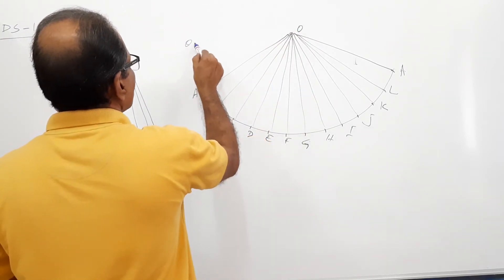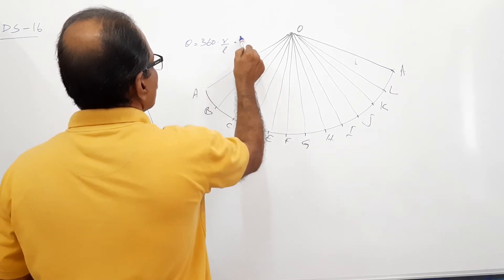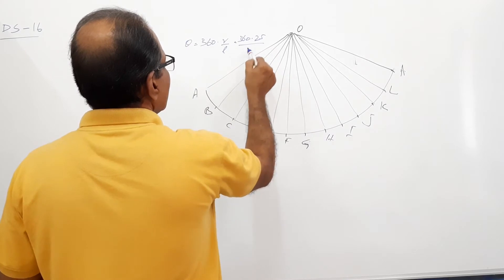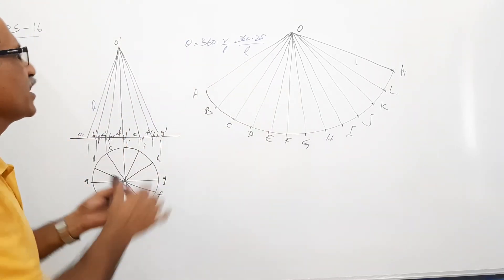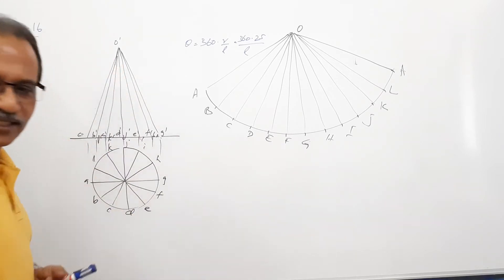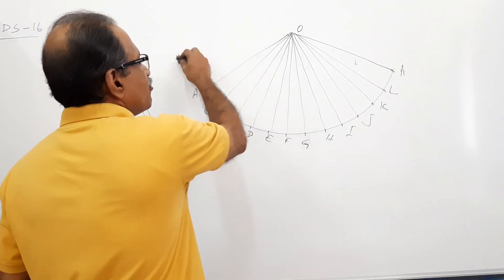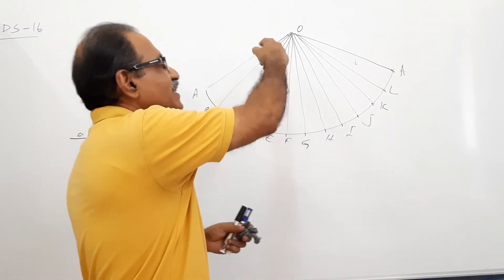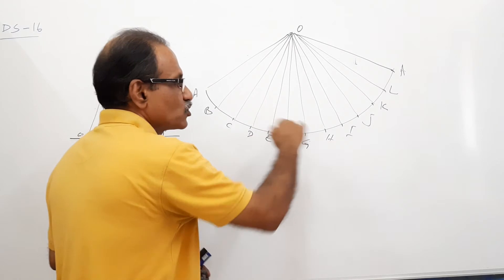What is the angle of theta there? Theta is theta equal to 360 into R by L is equal to 360 into base radius is 25. L is this distance. We don't know how much it is. We are not interested. Theta calculation is not necessary. That is why we use this procedure.